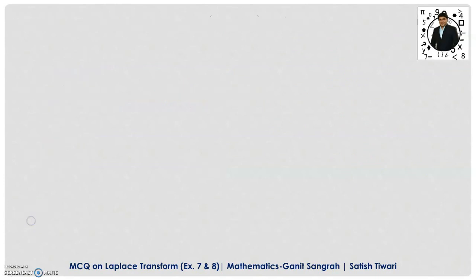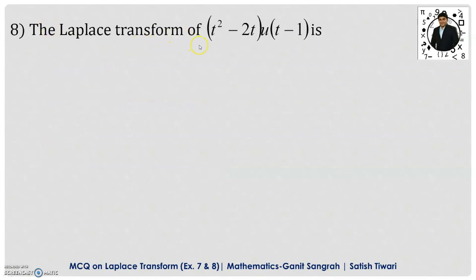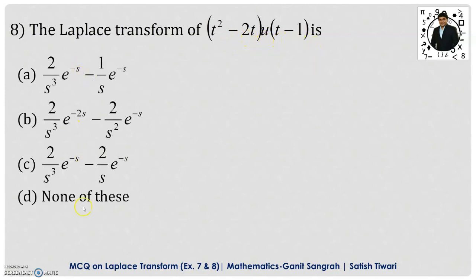Example number 8: find the Laplace transform of (t² − 2t) · u(t − 1). There are 4 options. You can solve this two ways — I will show both. You should know the formula: L{f(t − a) · u(t − a)} = e^(−as) · F(s).